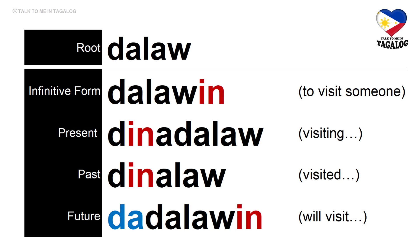Root word: dalaw. Infinitive form: dalawin — meaning to visit someone. Present tense: dinadalaw — visiting someone. Past tense: dinalaw — visited someone. Future tense: dadalawin — will visit someone. This is synonymous to the word bisitahin, the one that we learned earlier.